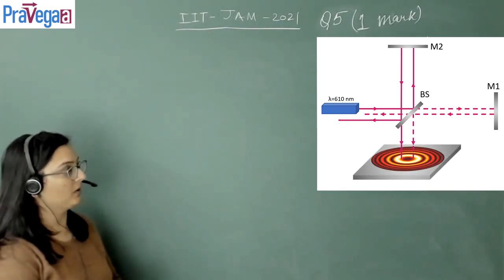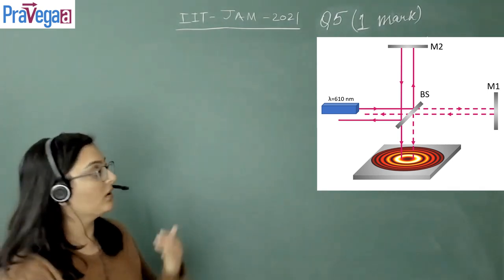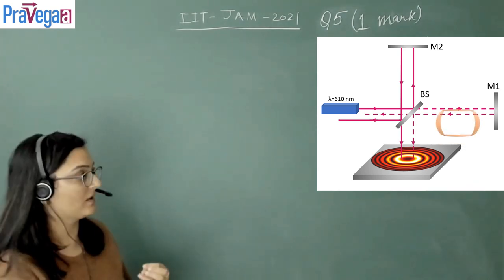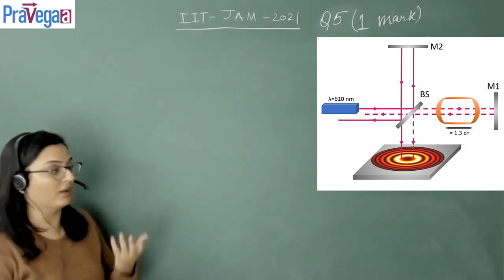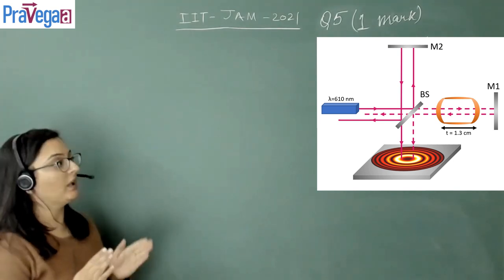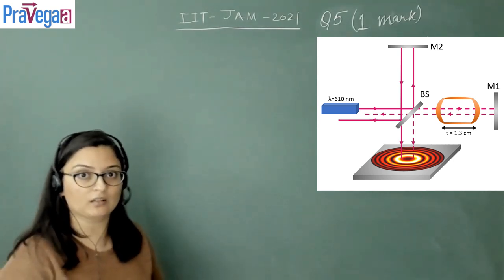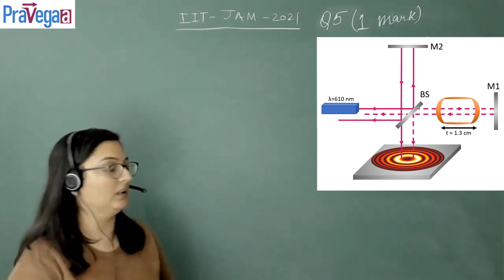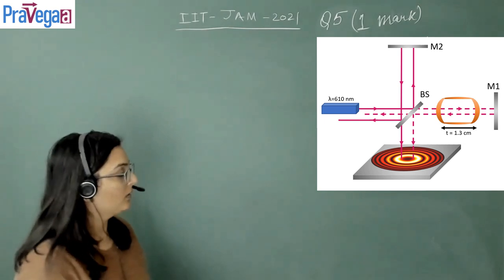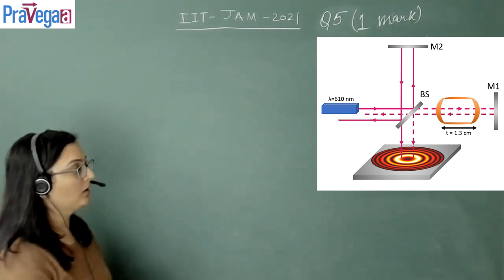Now it is also given that in one of the paths, a glass cavity is introduced of thickness t, which equals 1.3 centimeters. Initially we take it as filled with air, that means the refractive index of the medium inside the cavity is 1.